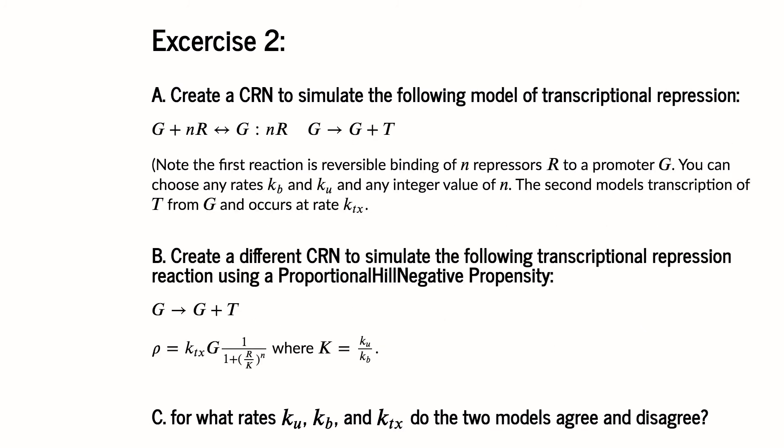The second exercise is very similar, where you'll be looking at a mass action model of a gene that binds to a repressor. And then you can also simulate that with a hill function. And I want you to look at when the hill function and the mass action model agree or disagree.